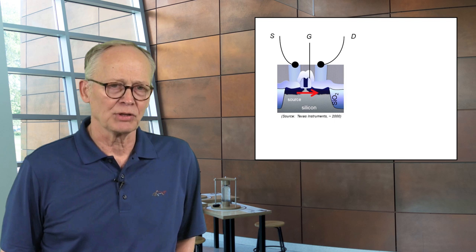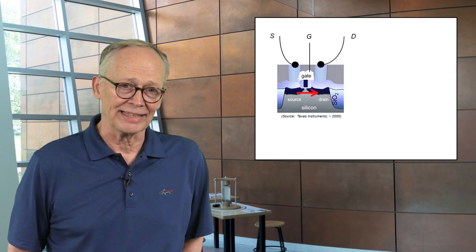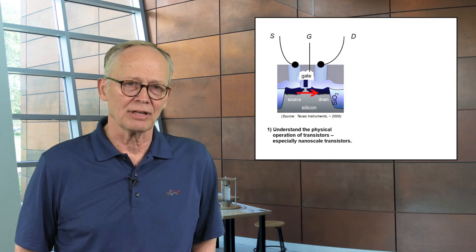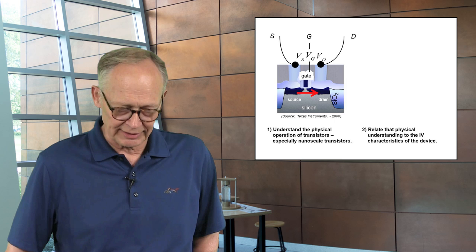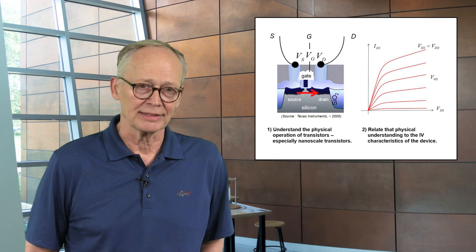...out the drain, under the control of a third electrode we call the gate, which controls their flow. The first objective of this course is to understand the physical operation of this device. How does current flow in response to the voltages we apply to the terminals? Now the second objective is to relate those current voltage characteristics, to understand these transistor characteristics and understand how they impact real circuits, digital and analog circuits.